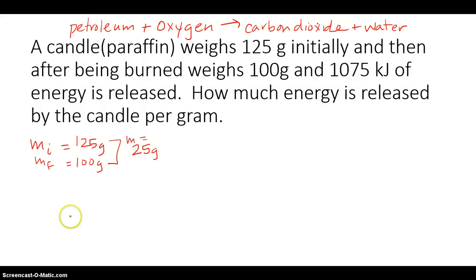I want to know how much energy is released. Well, I know that for 25 grams, I have 1075 kilojoules of energy released. If I want to set that up as a proportion, I can say, well, it looks like there's 1075 kilojoules of energy released for 25 grams.